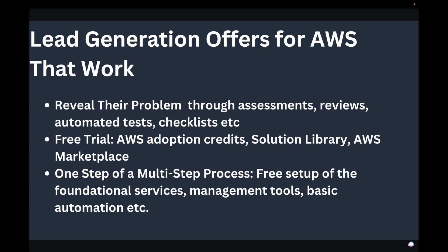Now I want to talk about lead generation offers for AWS that actually work. The first type is 'reveal their problem.' You can offer assessments, reviews, automated tests, or checklists. For example: 'Is your AWS environment secure enough? Use this checklist to find out.' Through assessments, reviews, automated tests, and checklists, you're revealing the problem to the customer. Customers want to know their problems so they can avoid heavy penalties or damage later — they want to identify their AWS issues before it's too late.